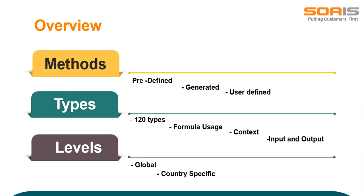There are three different methods in Fast Formula. A predefined formula is an Oracle-delivered formula and cannot be modified. A generated formula is user setup and system generated from legislative templates. For example, HCM Extract generates formulas for blocks and items, and element templates generate formulas for main and hidden elements. A user-defined formula can be created by the consultant based on the requirement.